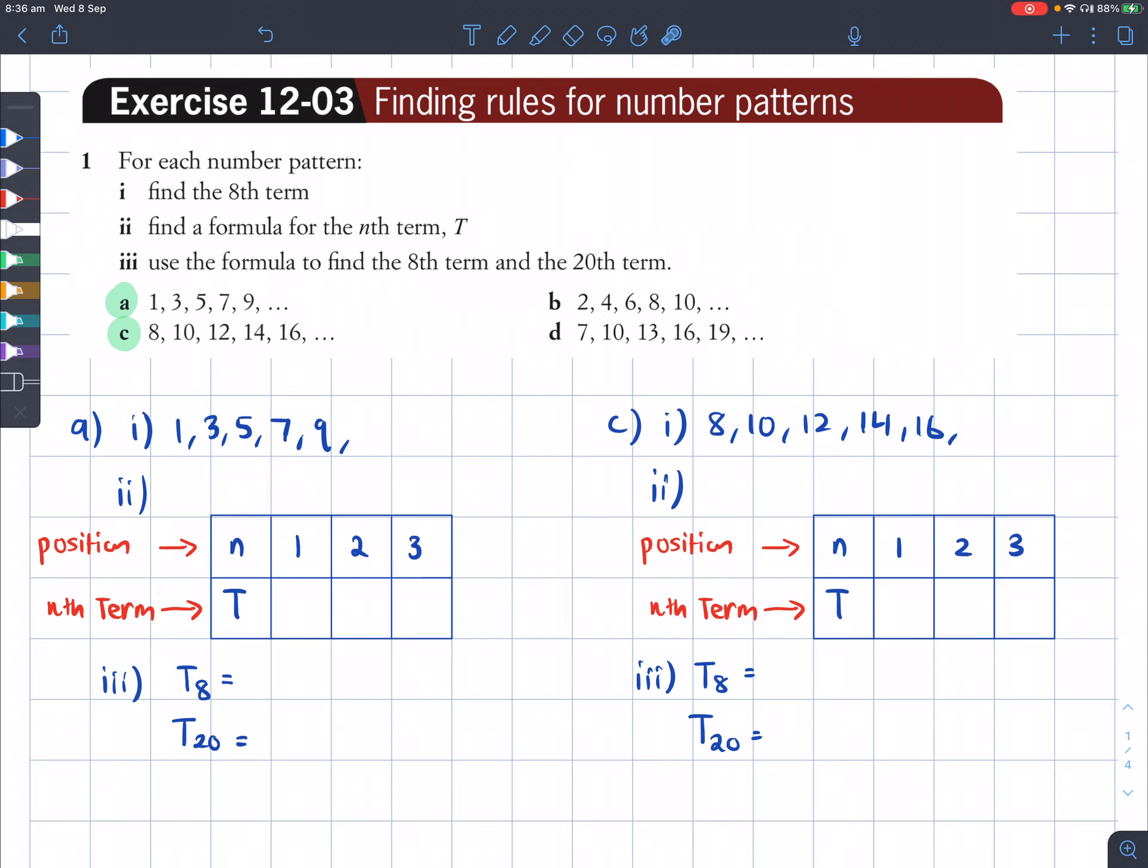In question a, we've got a number pattern here which has 1, 3, 5, 7, 9. To find the 8th term, we just have to list the next 3 because there's 5 numbers already, and this goes up by 2. If we add 2 to these numbers every single time to get to the next one, we'll get 11, then 13, and then 15. So 15 is our 8th term.